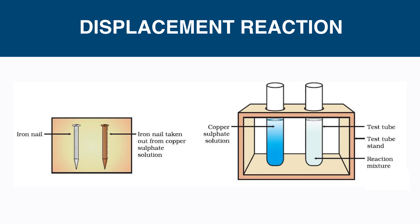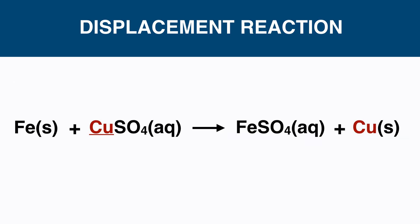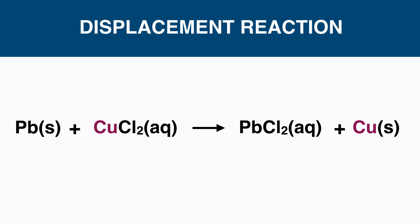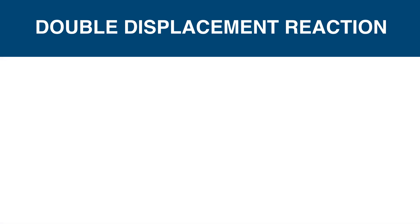The blue color of copper sulfate solution changed to pale blue because the copper gets removed from the solution. Here iron displaces copper from its solution. Iron is a more reactive metal than copper. Some more examples are: zinc displaces copper to form zinc sulfate, and lead displaces copper to form lead chloride. In these two reactions, copper is less reactive than zinc and lead.